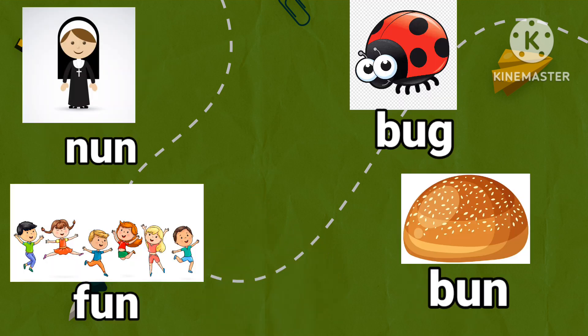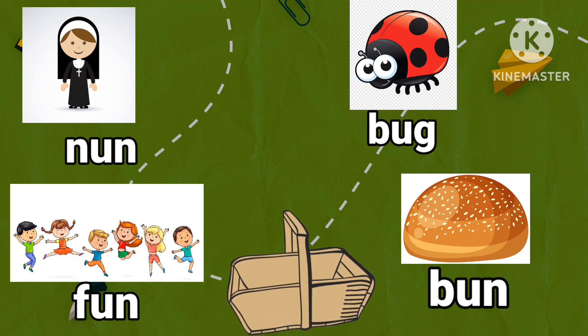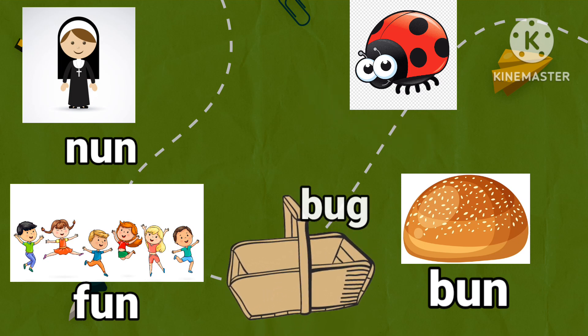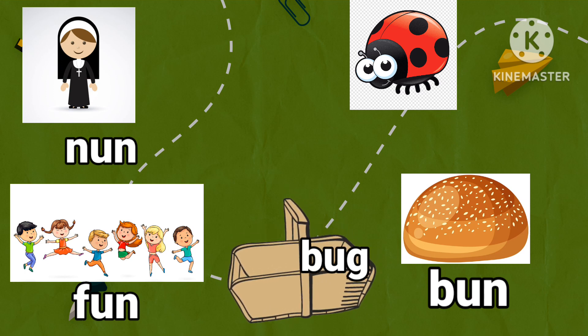Nan, fan, bug, bun. Pick out the word that does not rhyme in the group. Bug. Pick up the word bug and drop it in the basket.